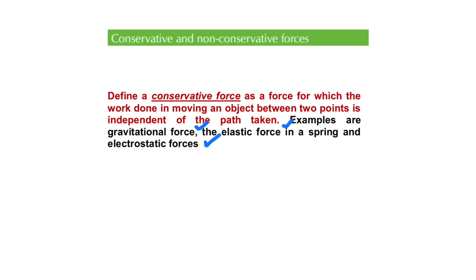The work done by conservative forces equals the negative change in the object's potential energy, which also equals the change in the object's kinetic energy. We could derive this, but for the sake of time let's agree: the work done by conservative forces is equal to the object's change in its potential energy (not the net work). It also relates to the object's change in kinetic energy.